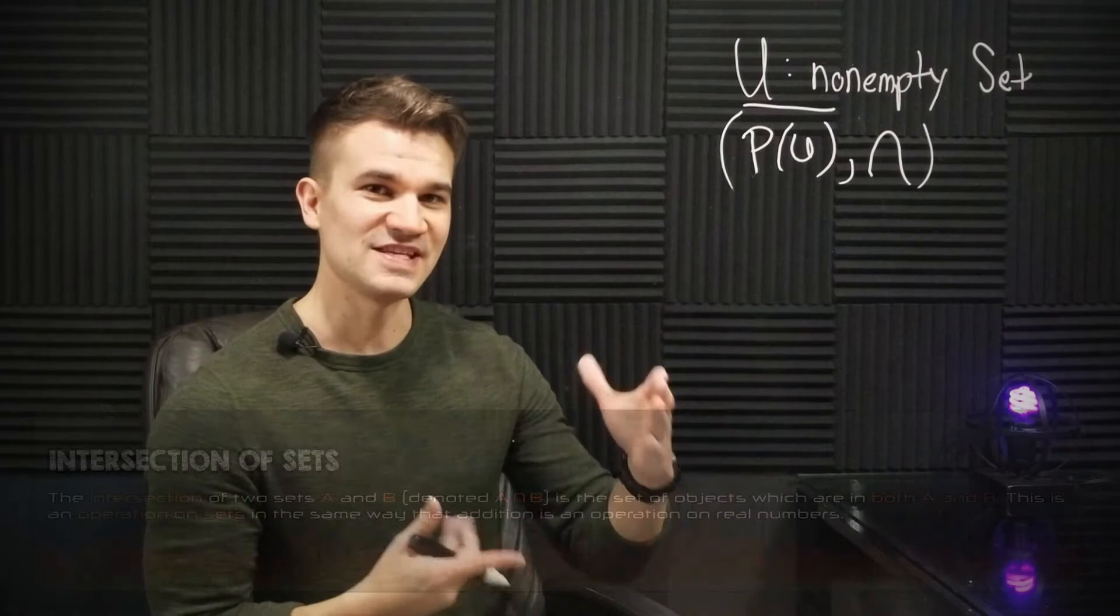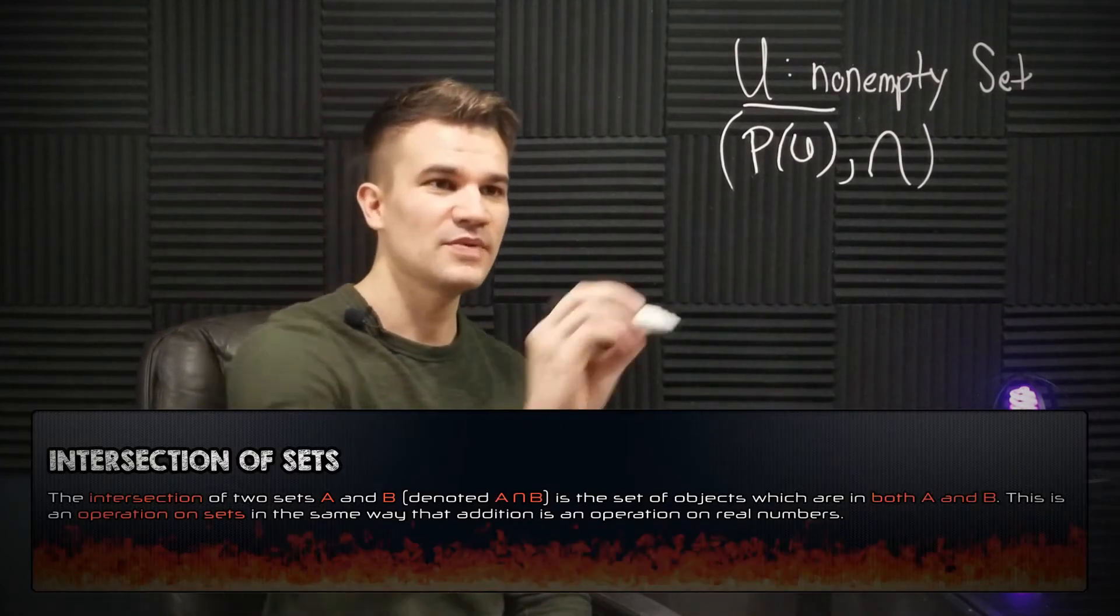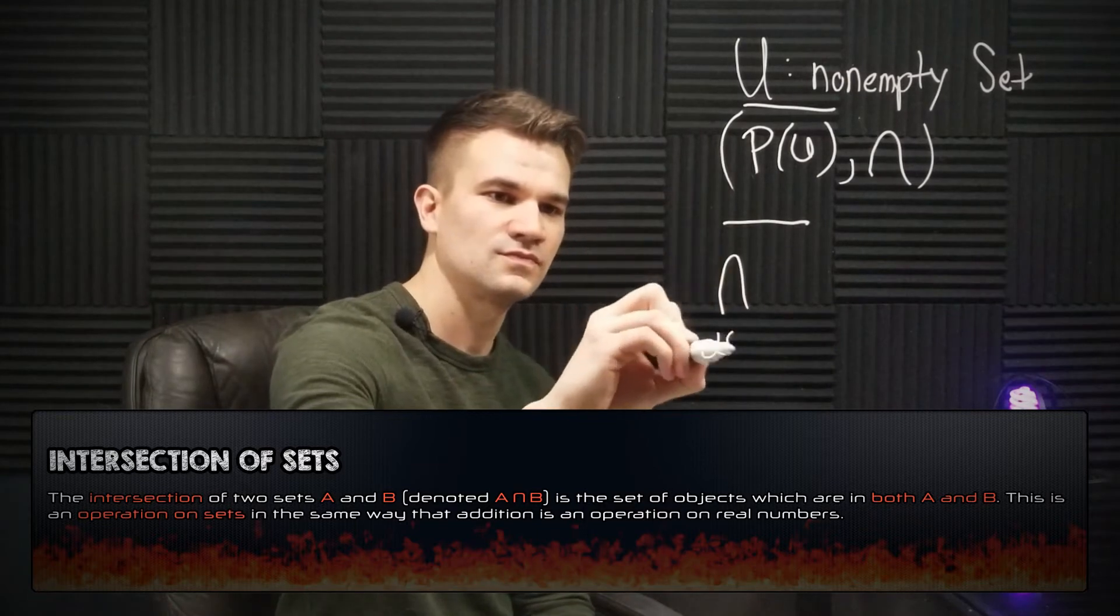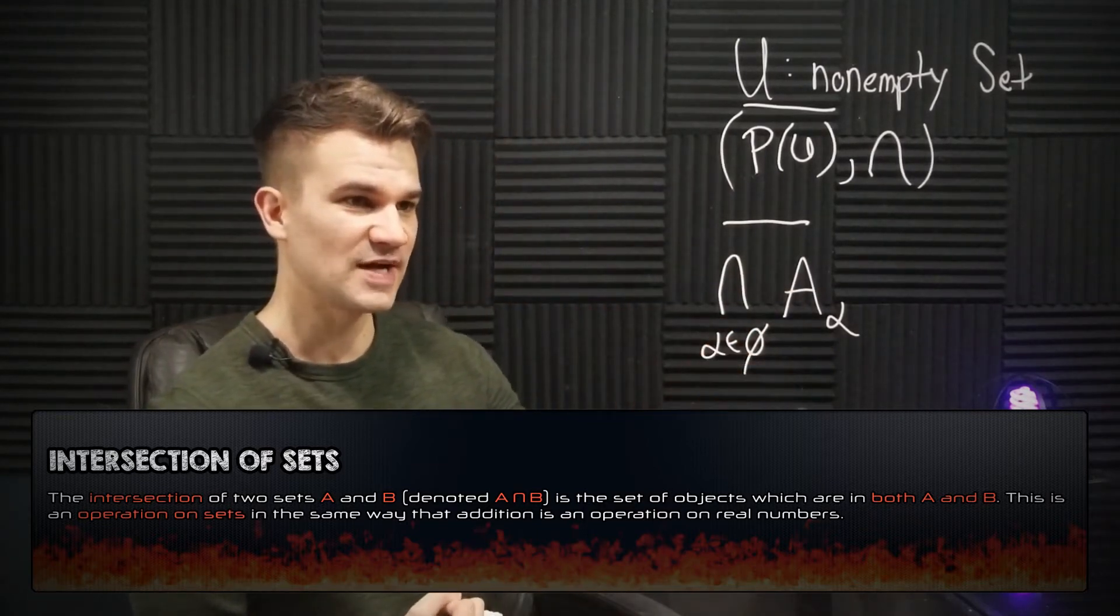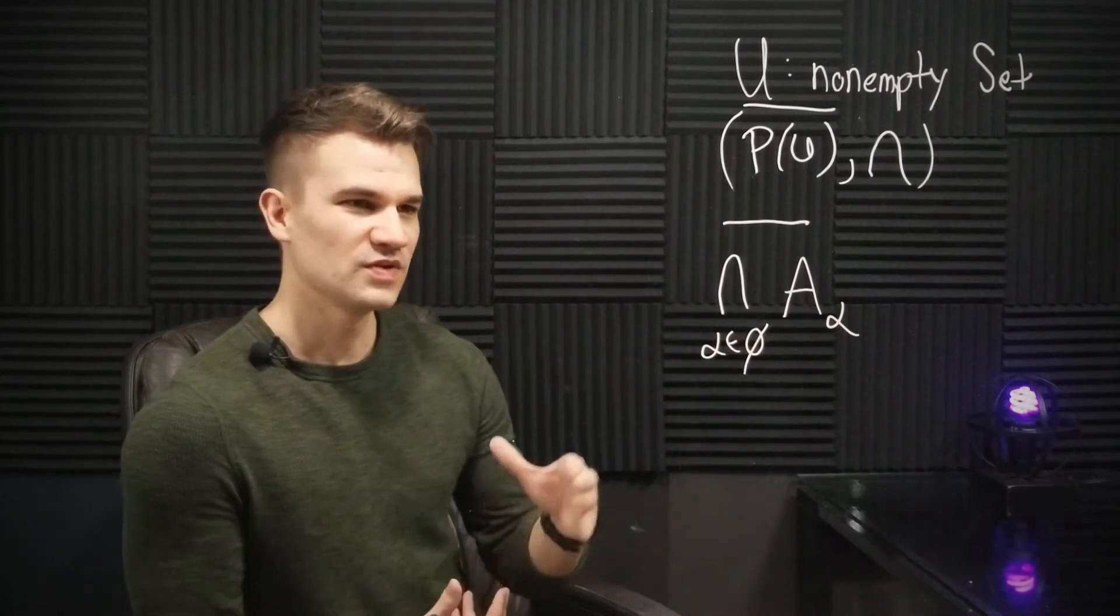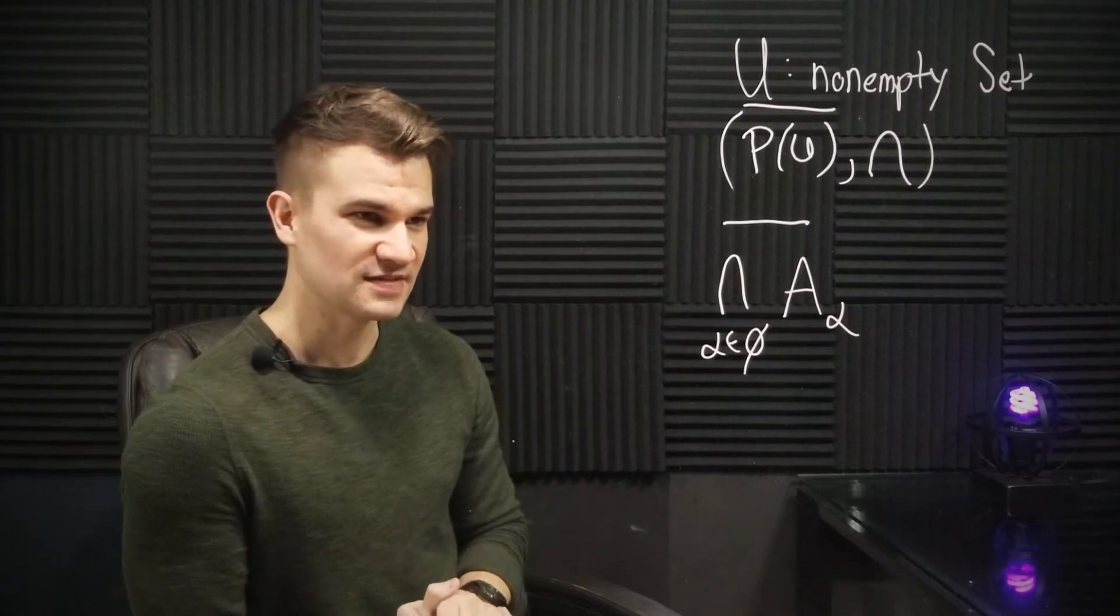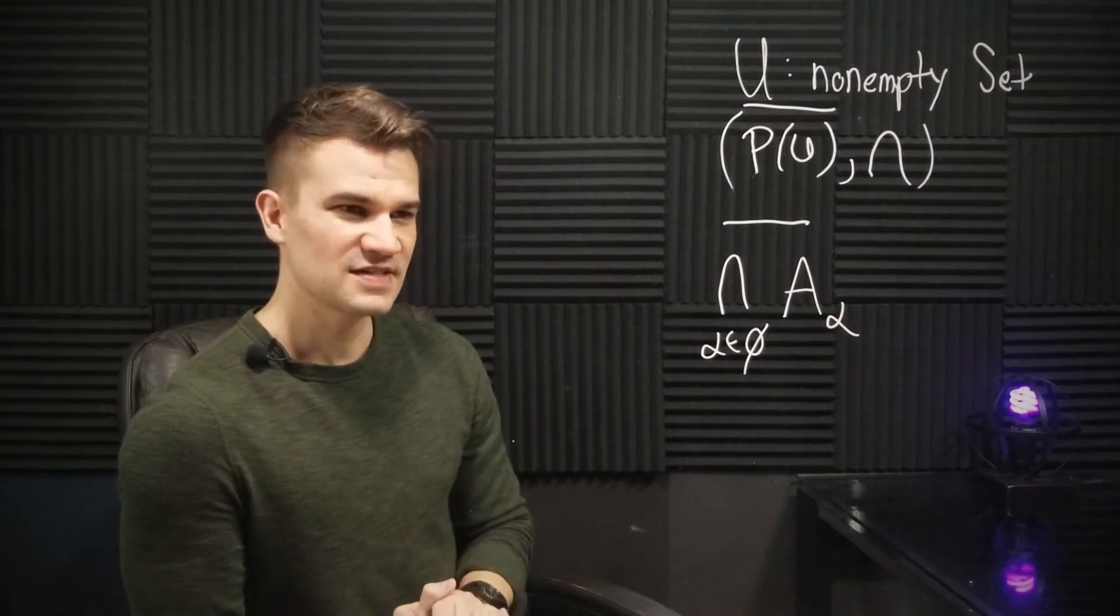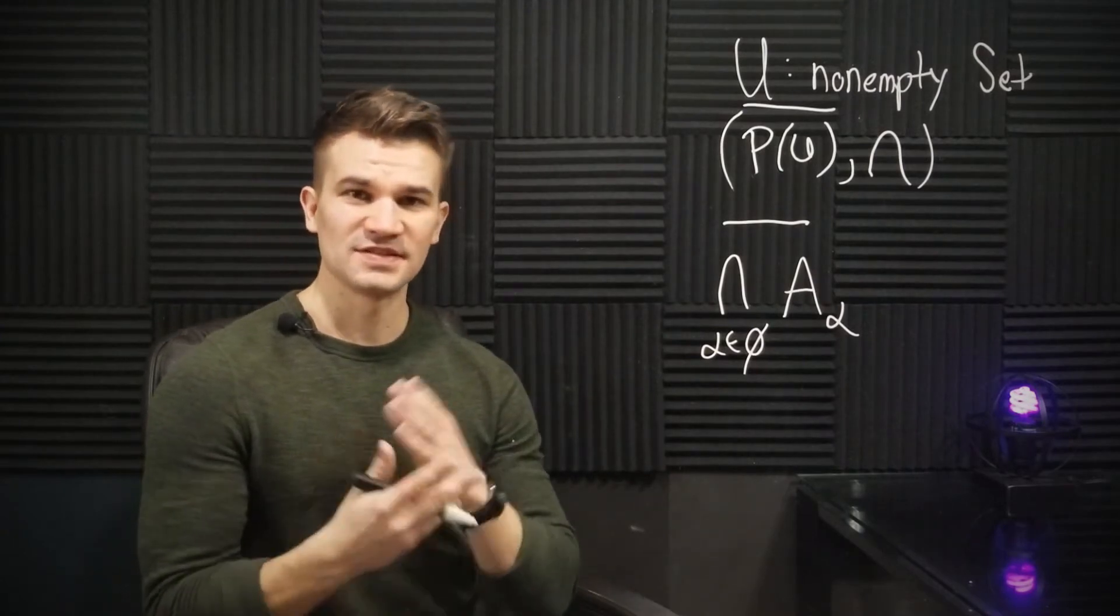But what if we looked at the intersection? What would the empty intersection be? Well, now we have this: the intersection of the sets A sub alpha such that alpha is in the empty set. So what is the intersection of this empty list of sets? Well, instead of asking what would it mean for an element to be in here, what would it mean for an element to not be in here?